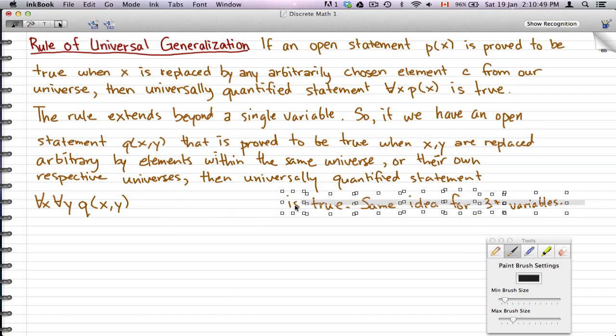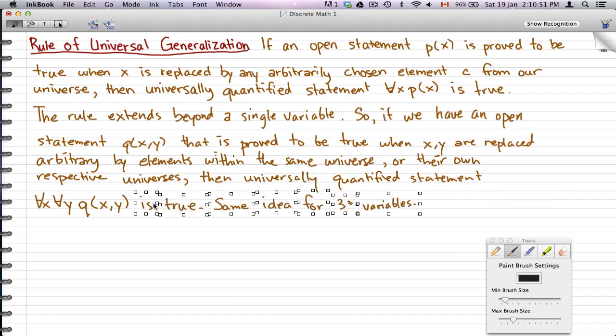And we have the same idea for three or more variables. So pretty much what this is all about is, for the rule of universal generalization, if you pick some element x,